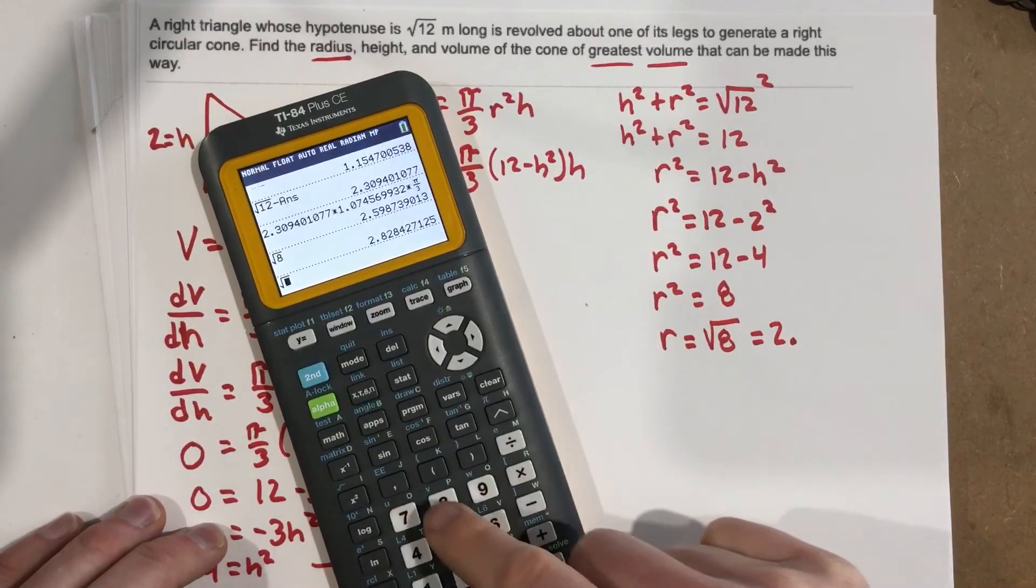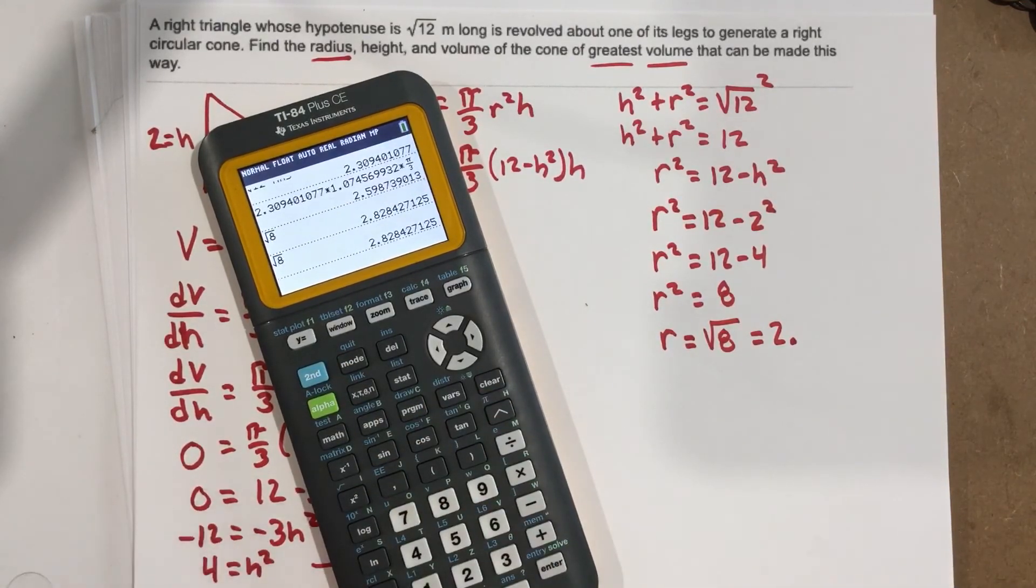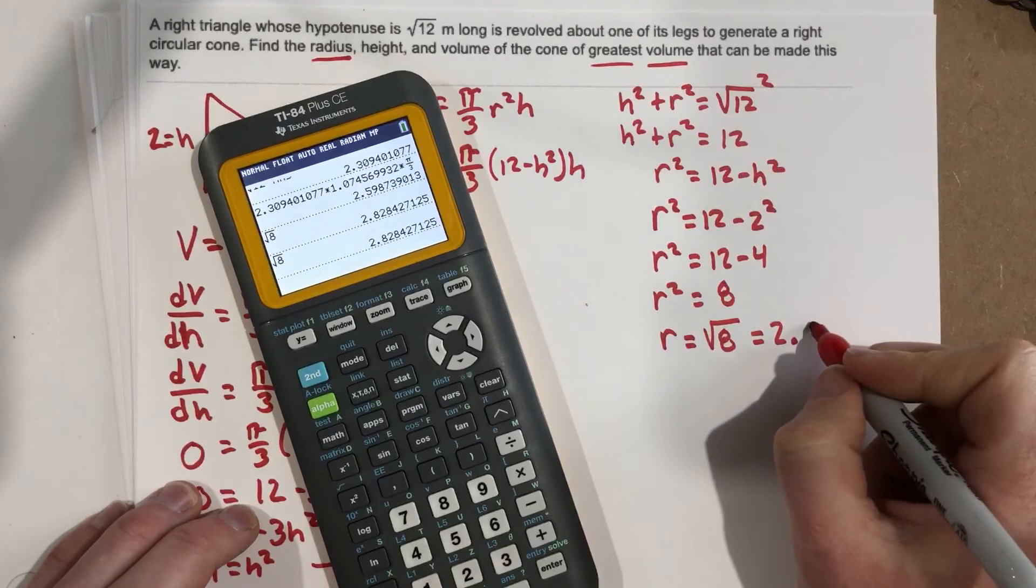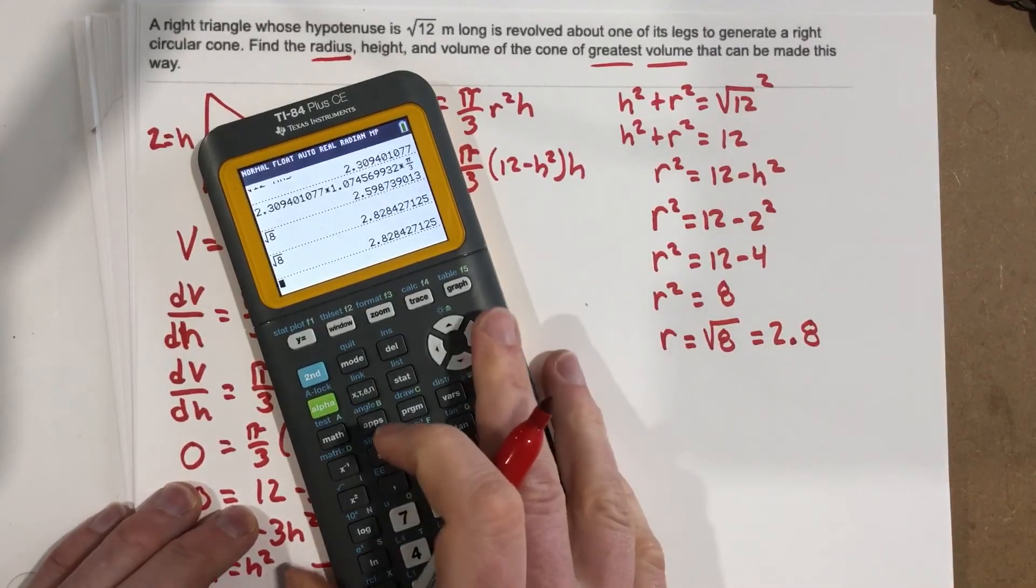So √8... and they want us to round to a tenth, so that's 2.8 for an answer there for our radius.